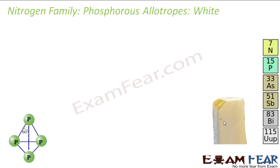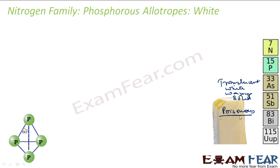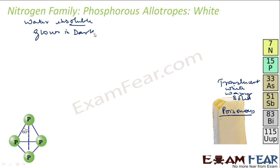This is how white phosphorus looks. It is translucent and white waxy solid. It is poisonous and water insoluble. It glows in the dark.